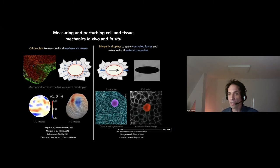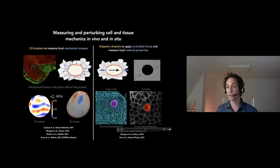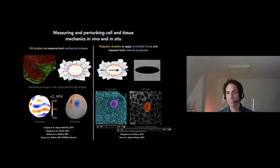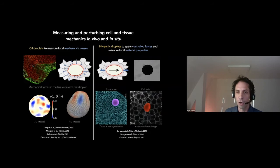We wanted to go beyond measuring forces and also apply controlled forces in three-dimensional tissues. We did this by turning these droplets magnetic. When we apply a uniform magnetic field, we can deform the droplet and apply controlled forces — essentially generating a force dipole in the system. These droplets are about cell size. We use them to poke on individual cells and study their response to mechanical forces — essentially doing in vivo mechanobiology. If you make the droplets bigger, you can probe material properties that emerge at supercellular scales.